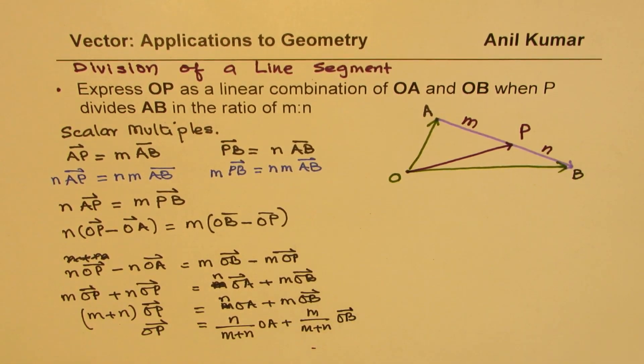So we get an expression for OP as N over M plus N times OA plus M over M plus N times OB. This is a very important formula.